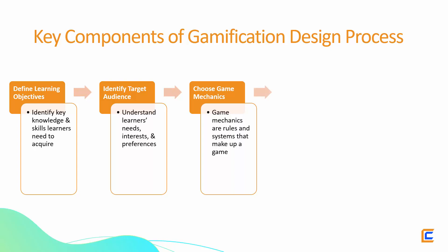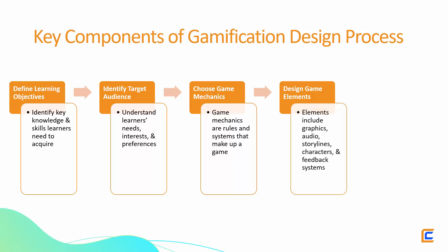Step 4: Design Game Elements. The fourth step in the gamification design process is to design the gamification elements that will support the learning objectives and engage the learners. Gamification elements include graphics, audio, storylines, characters, and feedback systems. By designing these elements, you can create an immersive and engaging learning experience that motivates learners to achieve their learning goals.